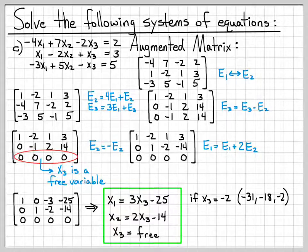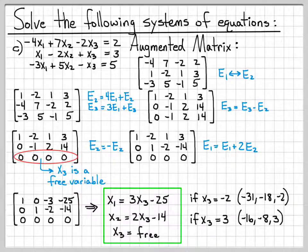For instance, if x3 is equal to a negative 2, then my solution is x1 equals negative 31, x2 equals negative 18, x3 equals negative 2. Or if I wanted to choose x3 is 3, then the solution would be a negative 16, a negative 8, and 3. I'm just plugging into these equations the value for x3.